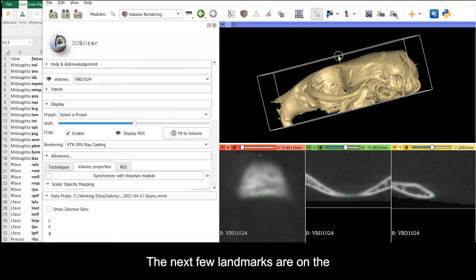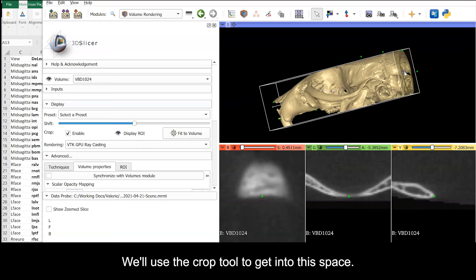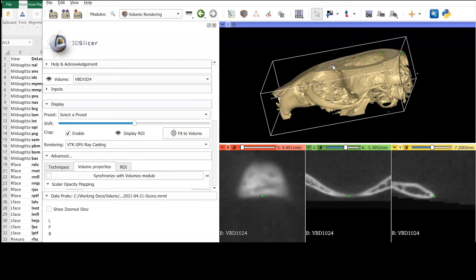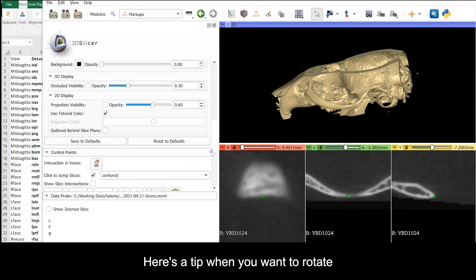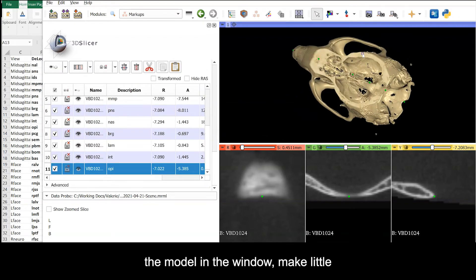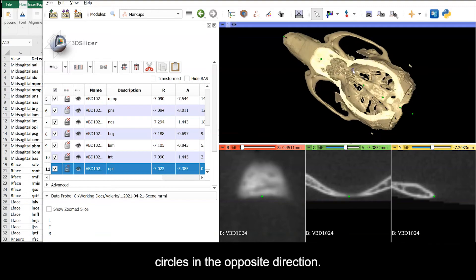The next few landmarks are on the mid-sagittal plane in the endocranial space. We'll use the crop tool to get into this space. Here's a tip. When you want to rotate the model in the window, make little circles in the opposite direction.